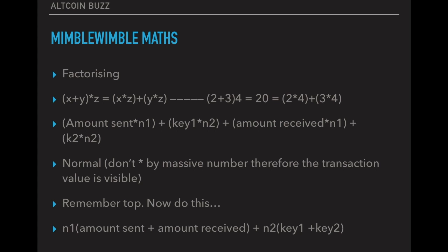So we're going to look at a little bit. (X+Y) times Z, and the X plus Y is within brackets. So before the times Z, that is the same as X times Z plus Y times Z. So if you look at two plus three times four, that equals 20, that's the same as two times four, which is eight plus three times four, which is 12, which equals 20. And this is key in this Mimblewimble maths. So you have the amount sent times by N1, which is a big number, just N stands for number. So first number plus the key, the key factor times a big number. Then you plus that by the amount received times the first big number plus key two times the second big number.